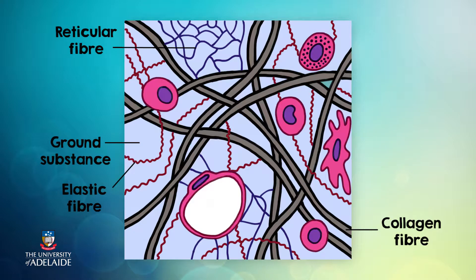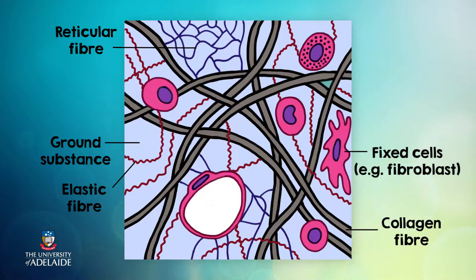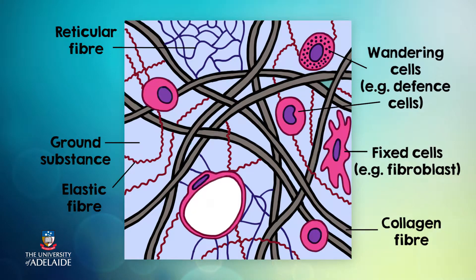Firstly there are fixed cells which are responsible for the general maintenance of the tissue, and wandering cells which are responsible for defending and repairing damaged tissue. Let's look at the following diagram which will give us an overview of the cell types that we find in loose connective tissue.